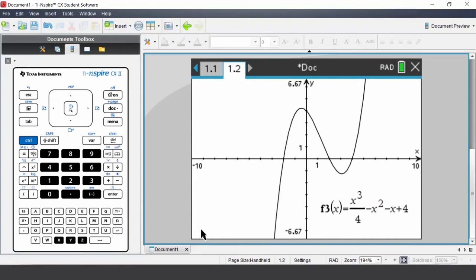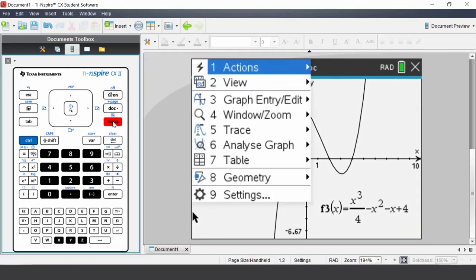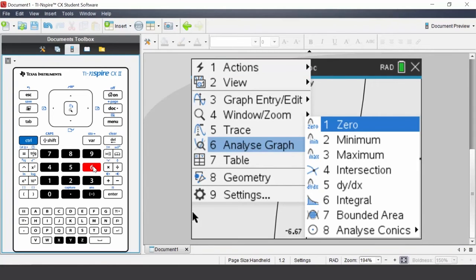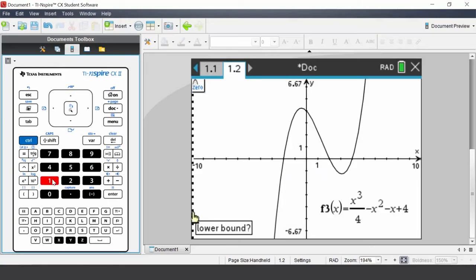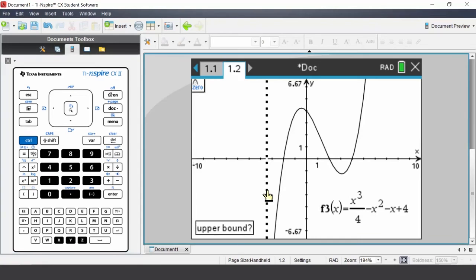Let's determine the zeros. Press menu, select analyze graph, select zero. Move the cursor to the left of the first zero, select it, and move it to the right of the zero and select it. So the zero is negative 2, 0.